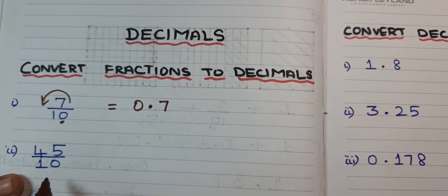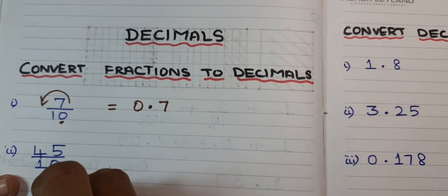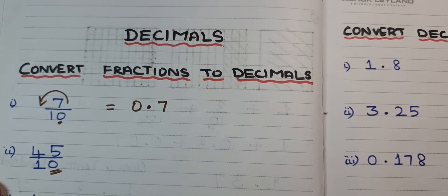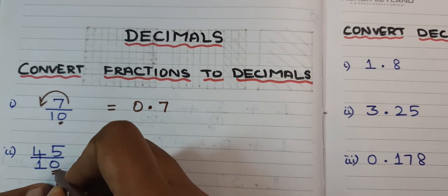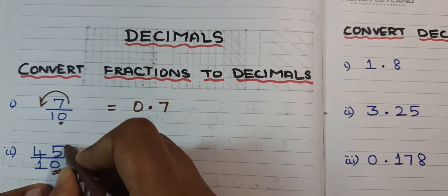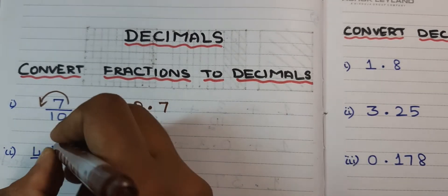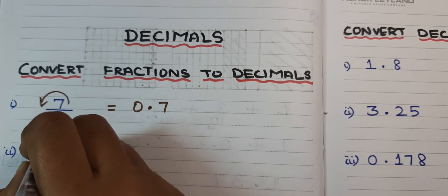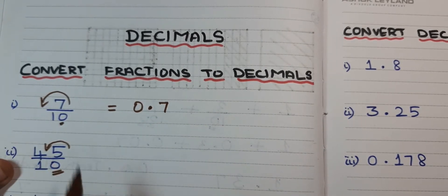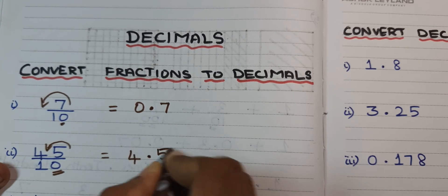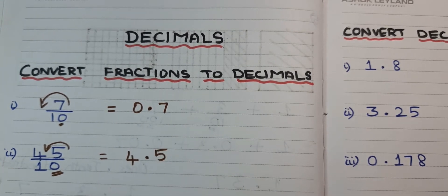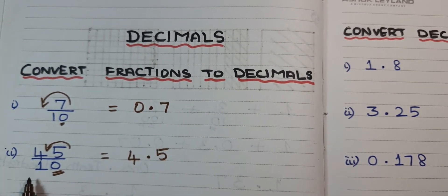Next problem: 45 divided by 10. How many zeros? Only one zero. But I have 45, which is a two-digit number. Since there is one zero, I have to place the decimal point before one digit, so the answer is 4.5. One zero means one digit.